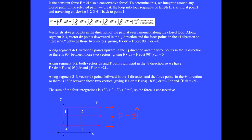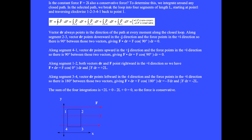Is the constant force F equals 2 i-hat also a conservative force? To determine this, we integrate around any closed path. We break the loop into four segments of length L, starting at point 1 and traversing clockwise: 1, 2, 3, 4, and back to 1. Along segment 2-3, vector dr points downward in the minus j-hat direction and the force points in the plus i-hat direction, so there is 90 degrees between them, giving F dot dr equals zero. Along segment 4-1, vector dr points upward in the plus j direction and the force still points in the plus i direction, so again F dot dr equals zero.